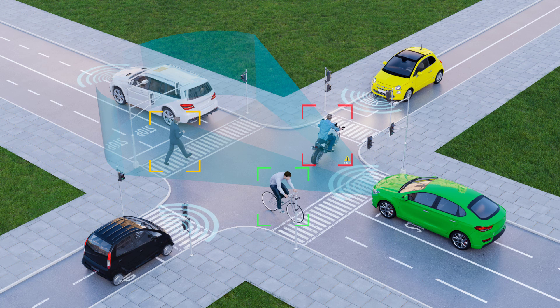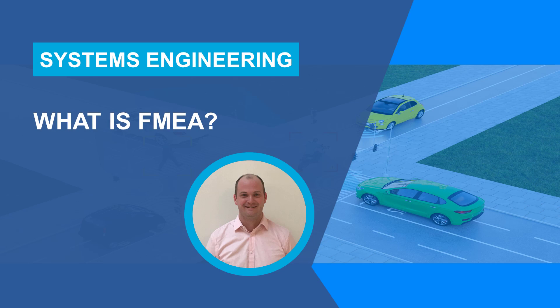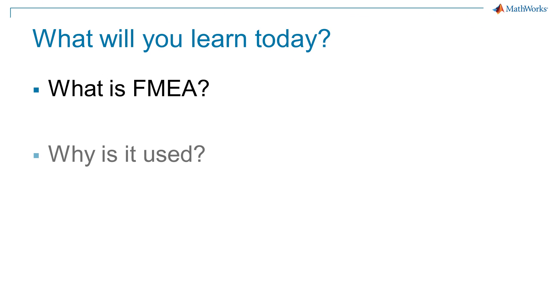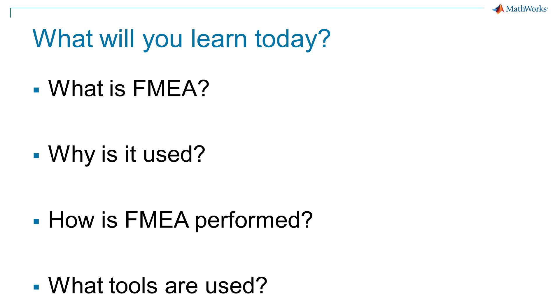Engineers who develop safety-critical systems need to account for many types of events and processes to ensure the end-users of these systems are not put in peril. In this video, we will cover: what is FMEA? Why is it used? How is FMEA performed? And what tools are used?